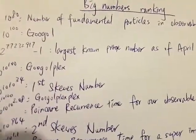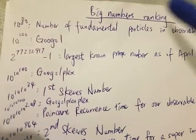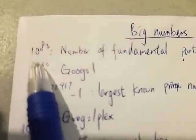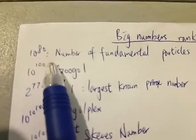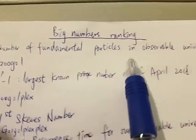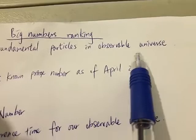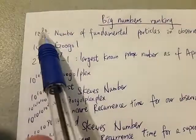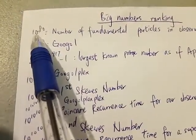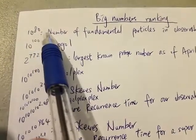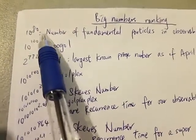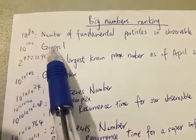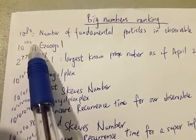Let's start with the smallest number on this list, which is 10 to the power of 80 — the number of fundamental particles in our observable universe. This number is 1 followed by 80 zeros, which is quite big already. Next we have a Googol, which is 10 to the 100.